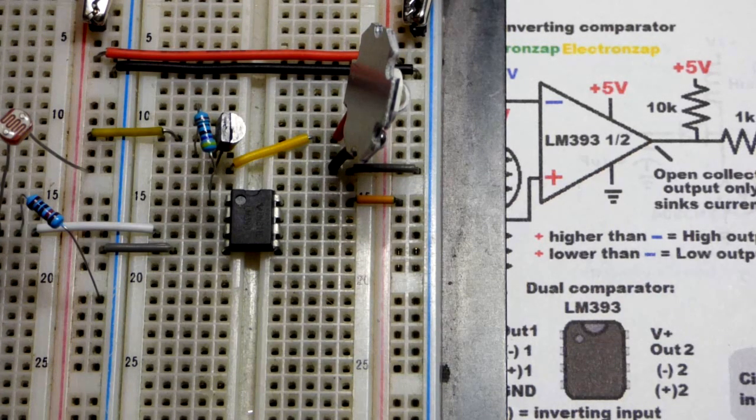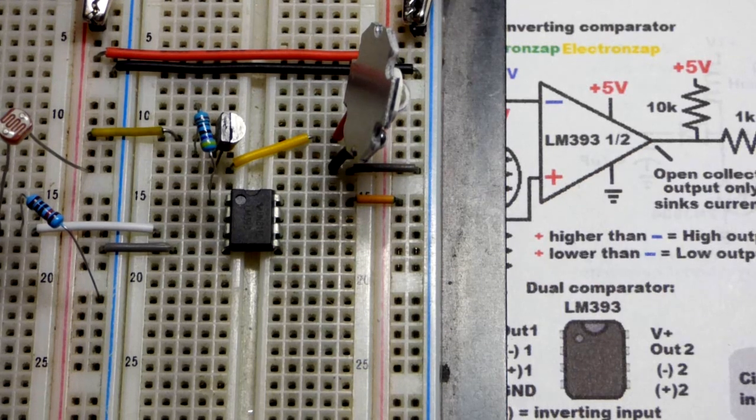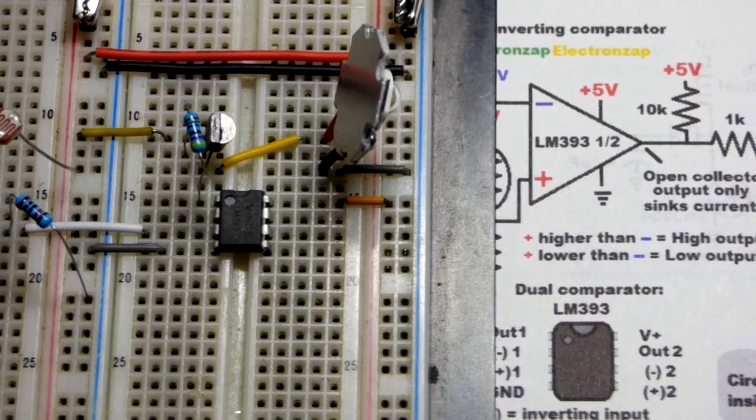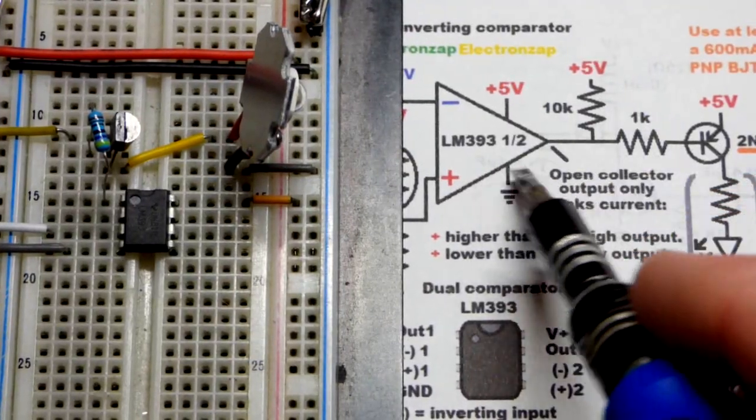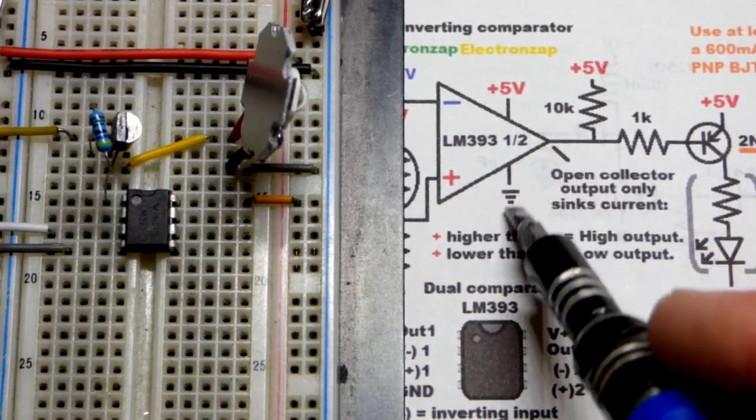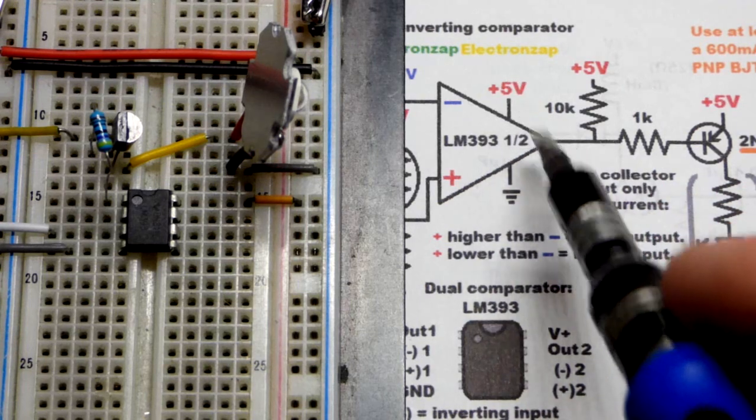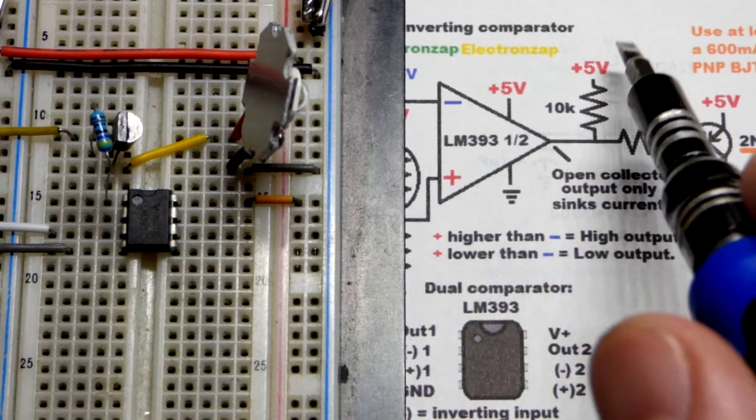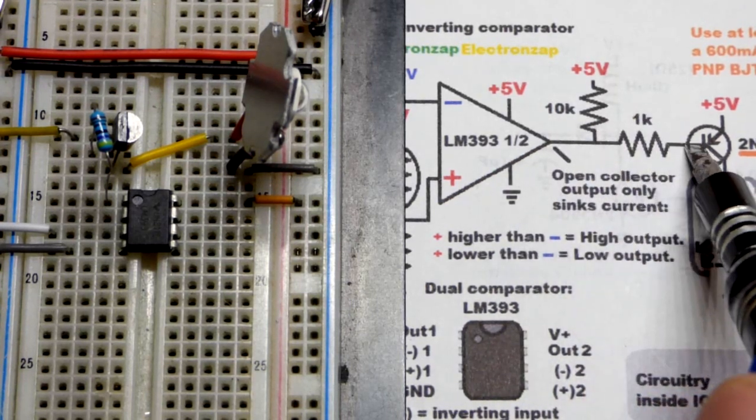Now we need a pull-up resistor. That's because the output of the LM393 is open collector. It connects to ground when the output is low, but does not connect to the positive supply. Basically, it turns off.